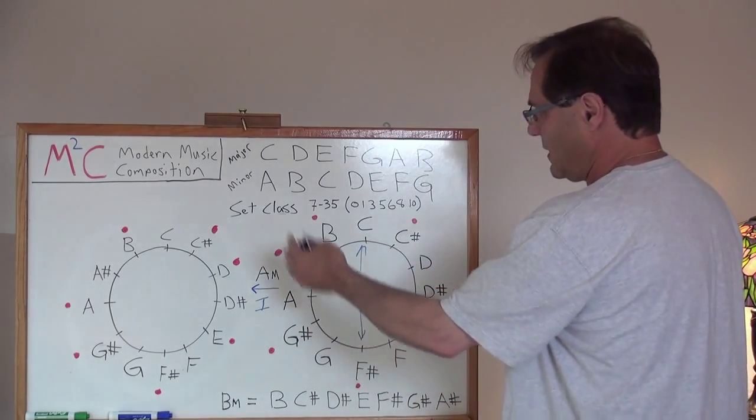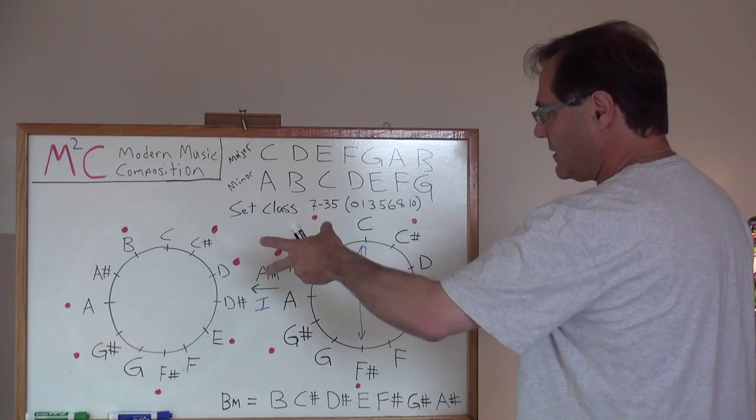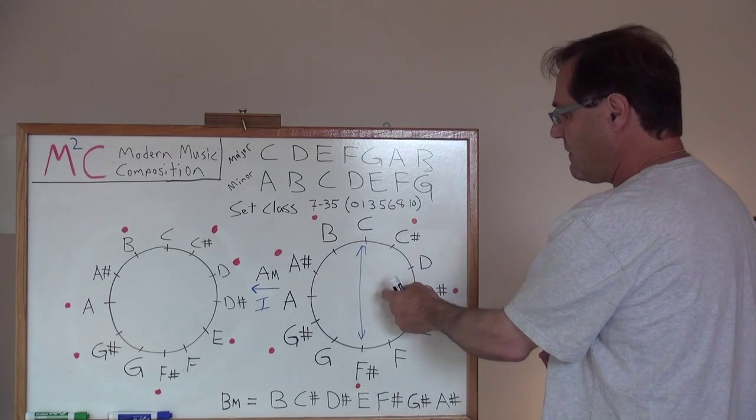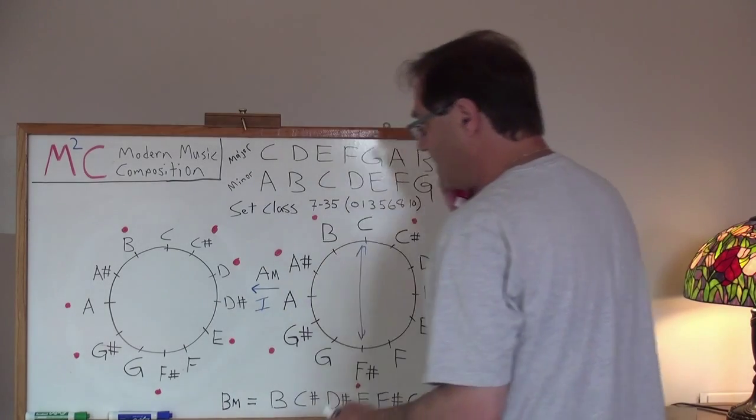We went from C major. We rotated one semitone. Took us to B major. From B major, we did an inversion and we produced the A major scale.